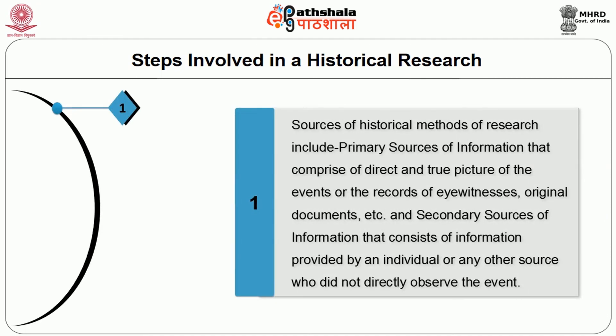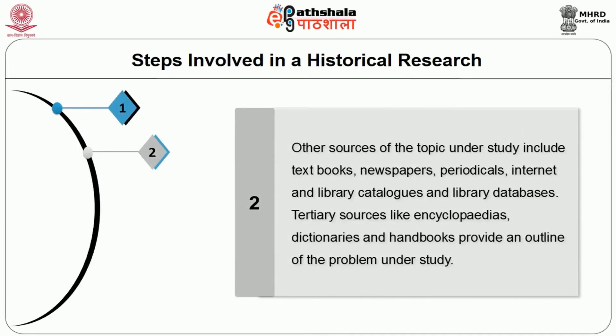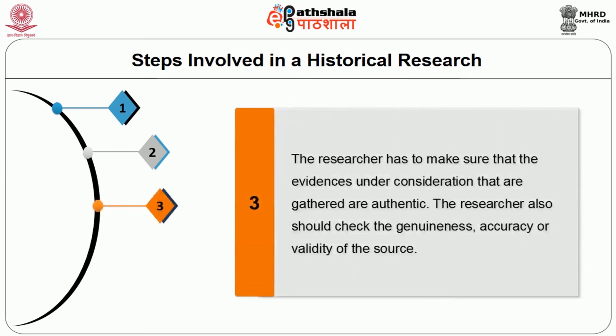Sources of historical methods of research include primary sources of information, which comprise a direct and true picture of events or records of eyewitnesses and original documents; and secondary sources of information, which consist of information provided by an individual or any other source who did not directly observe the event. Other sources include textbooks, newspapers, periodicals, internet, library catalogues, and library databases. Tertiary sources like encyclopedias, dictionaries, and handbooks provide an outline of the problem under study.